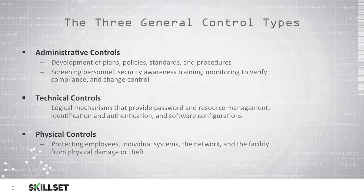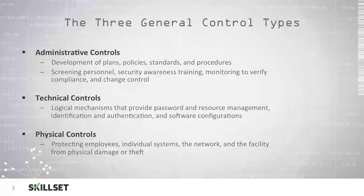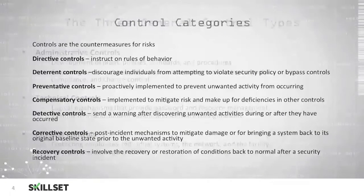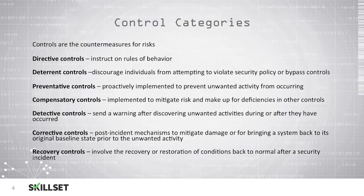Physical controls are designed to protect your employees, your buildings, and your systems from damage or theft. These are typically tangible items that you can see. Examples of physical controls include security guards, guard dogs, fences, locks, and surveillance cameras.